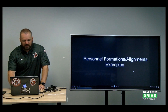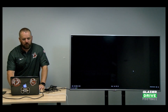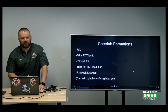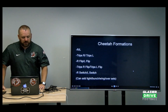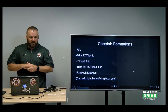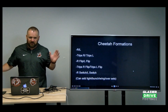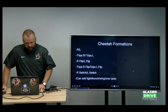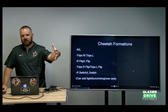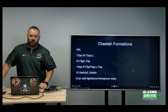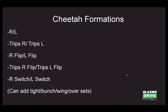Here are our personnel and formation alignment examples. In Cheetah — the 10 personnel offense — when we yell 'Cheetah,' the four receivers run onto the field. We have R and L, Trips Right, Trips Left, Right Flip, Left Flip, Trips Right Flip, Trips Left Flip, R Switch, and L Switch. It's simple hand signals.